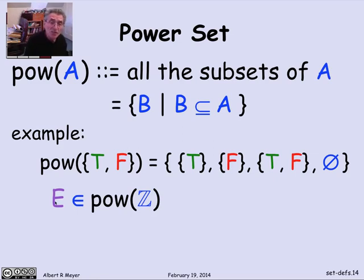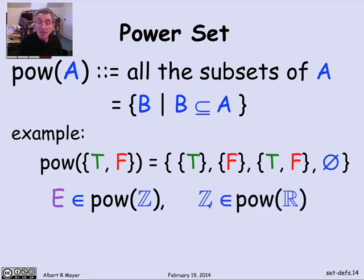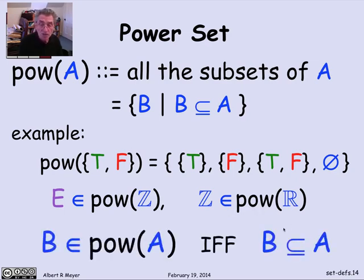The even numbers E that we just defined is a member of the power set of Z because it's a subset of integers. Even integers are a special case of integers. And the integers are a member of the power set of R. This is just a synonym for saying that integers are a subset of reals. Every integer is a real, so the integers are a subset of reals, which means they're a member of the power set of reals.